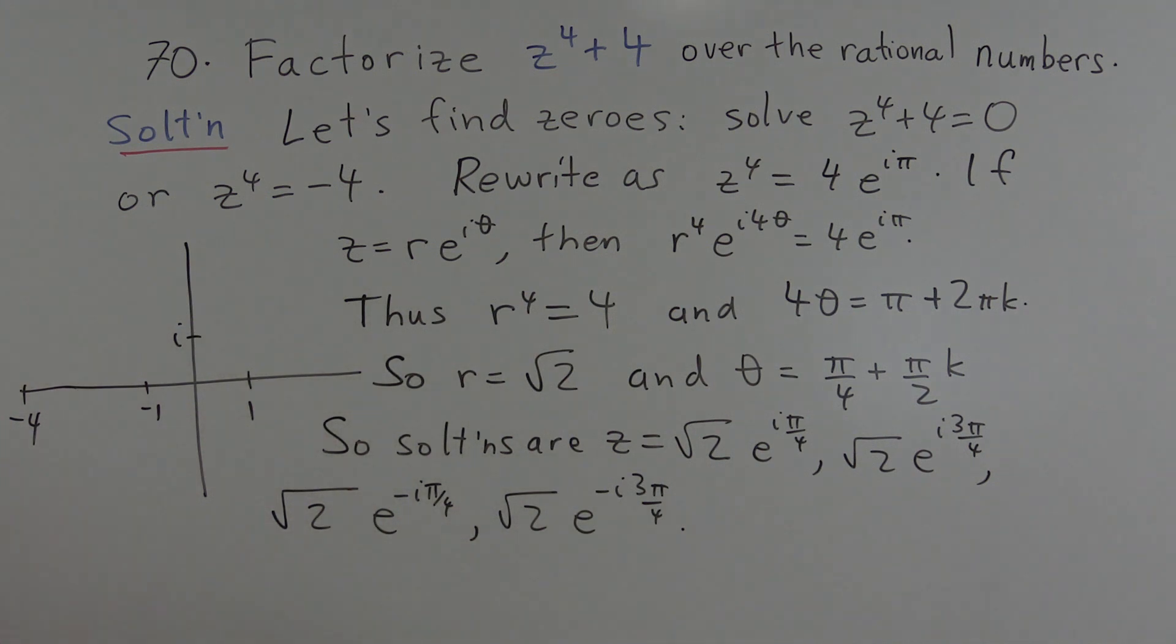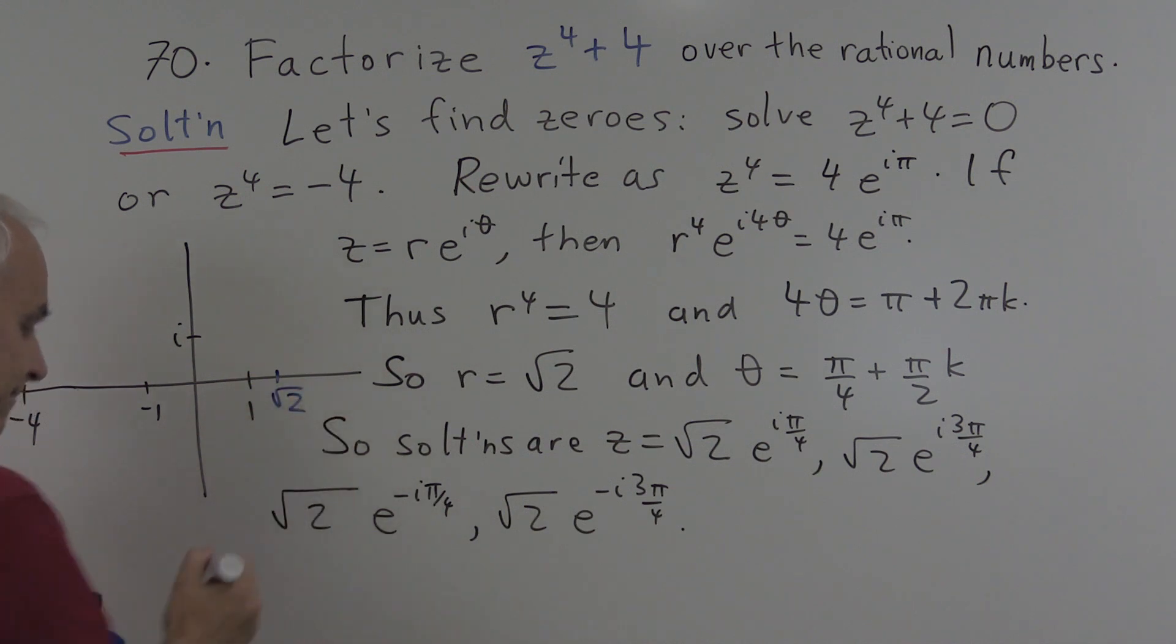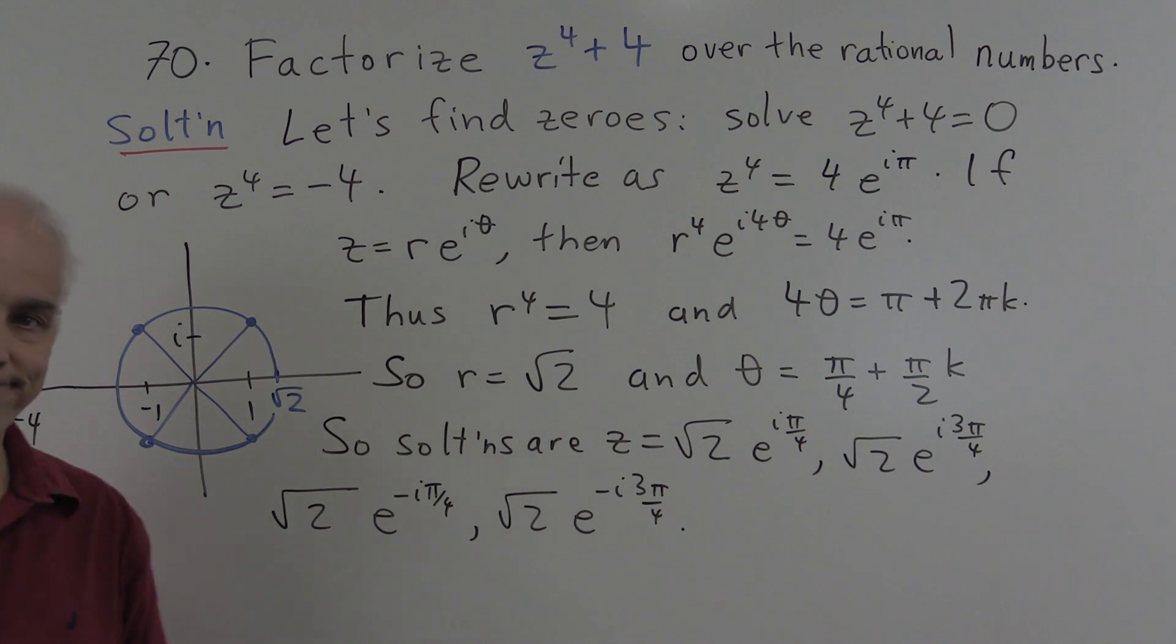And let's have a look to see where those solutions are. So somewhere here is root 2, and then here is the circle whose modulus is root 2. And on this circle, we have four complex numbers that have angles or arguments pi over 4, or minus pi on 4, or 3 pi on 4, or minus 3 pi on 4. So those are the four complex solutions to this equation.